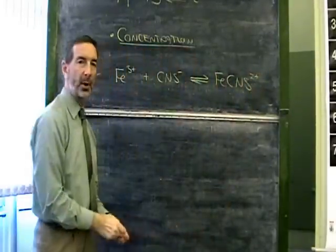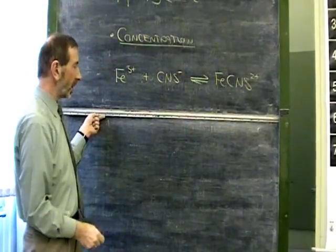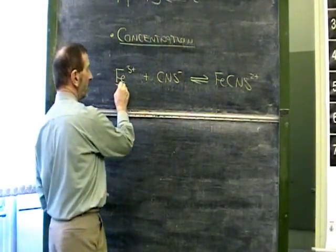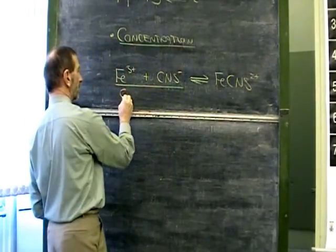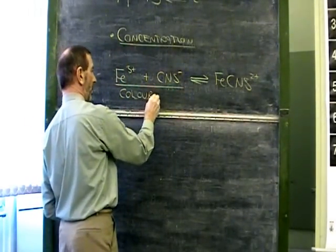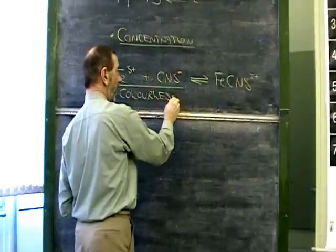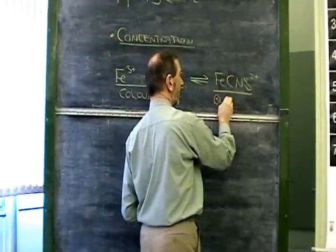As I say, the names of the chemicals don't matter. The point is, the chemicals on this side tend to be colorless in appearance, whereas this substance is a blood red color.